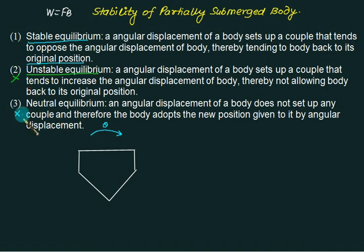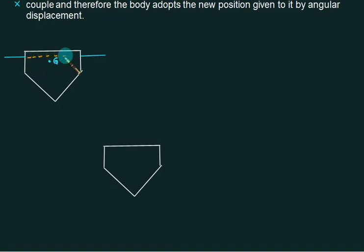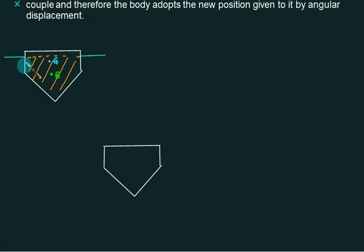We have to check the condition for stable equilibrium for a body already in floating condition. Initially the body is in a position with a certain depth of immersion. G is the center of gravity of the body — the ship. This line represents the water level. This cross section represents the volume displaced, and its centroid is represented by B, the original center of buoyancy.